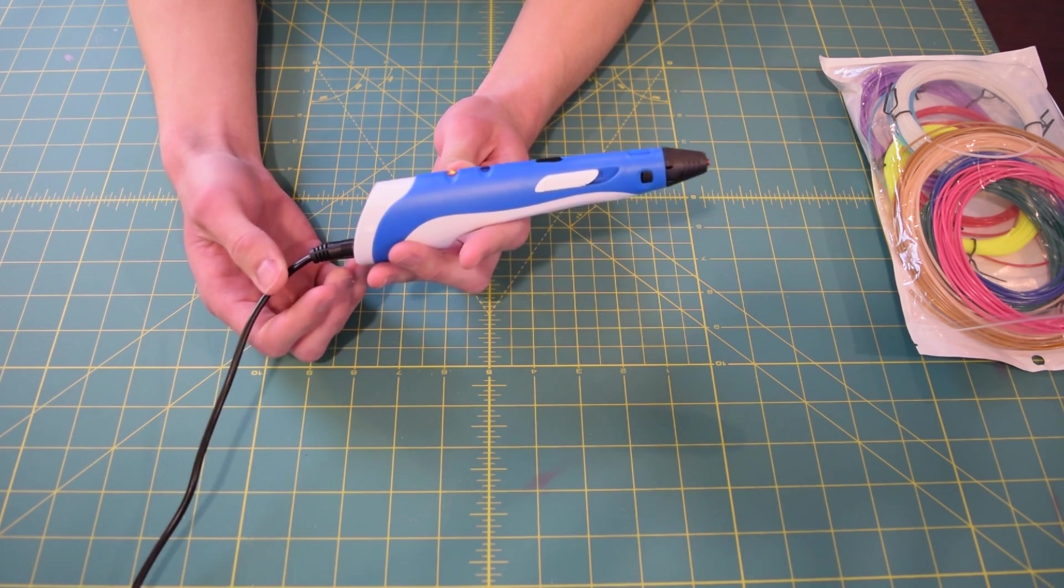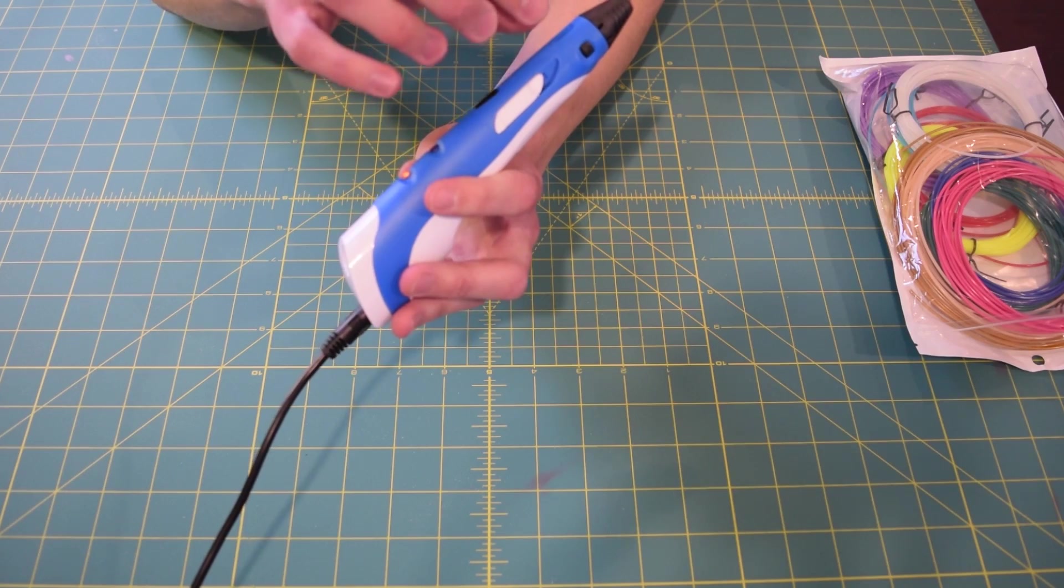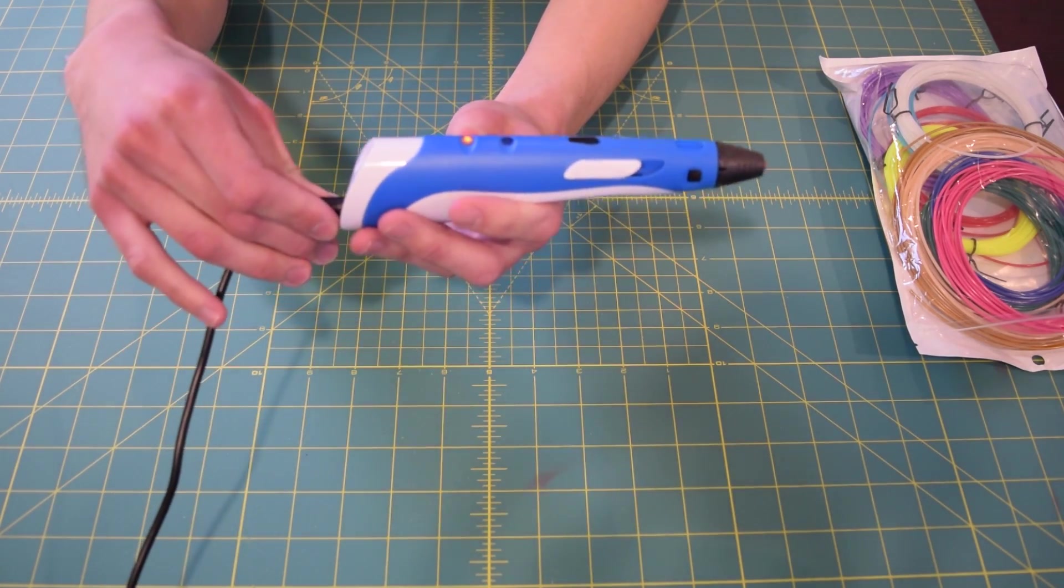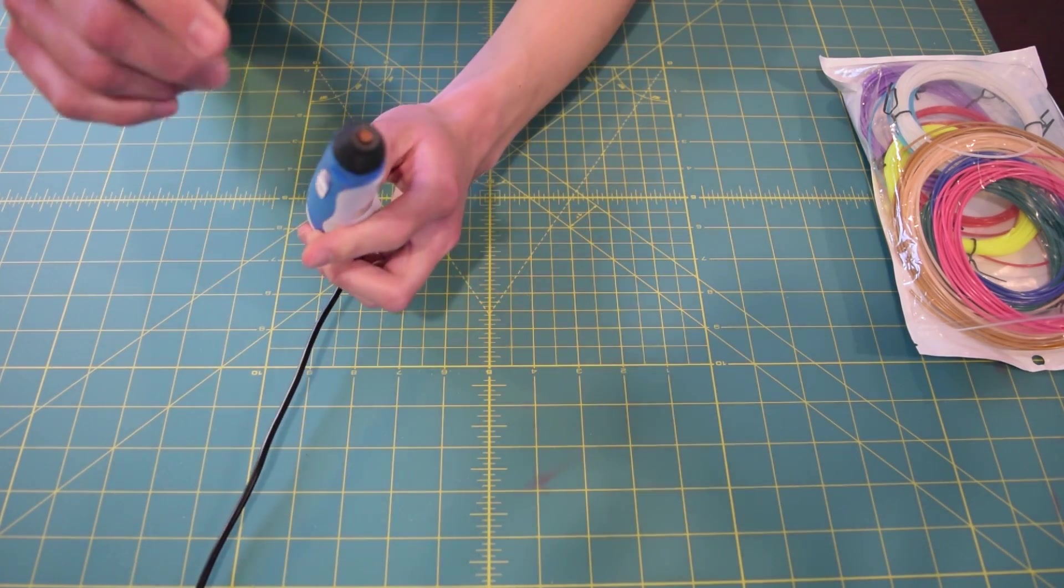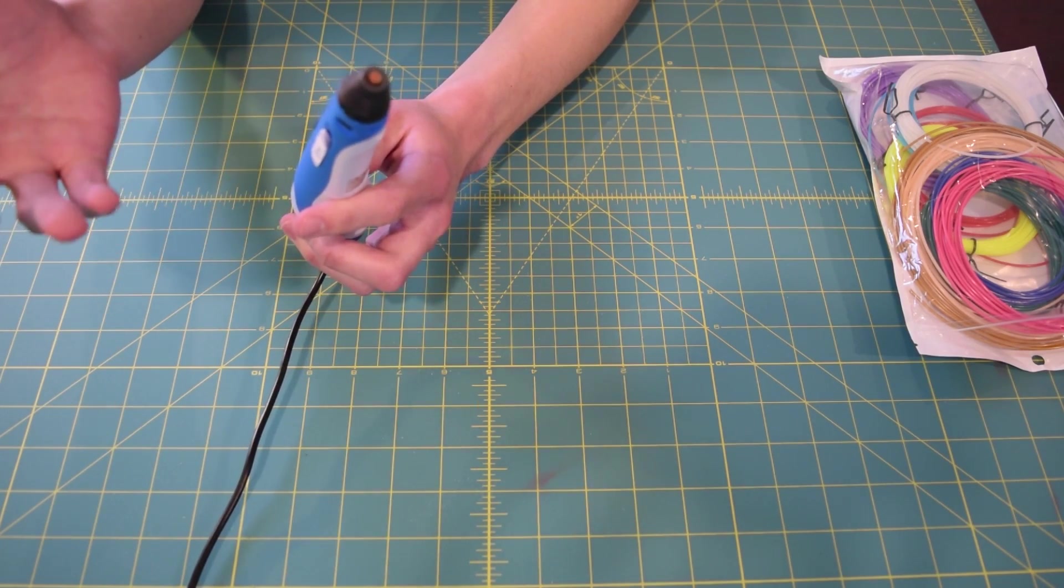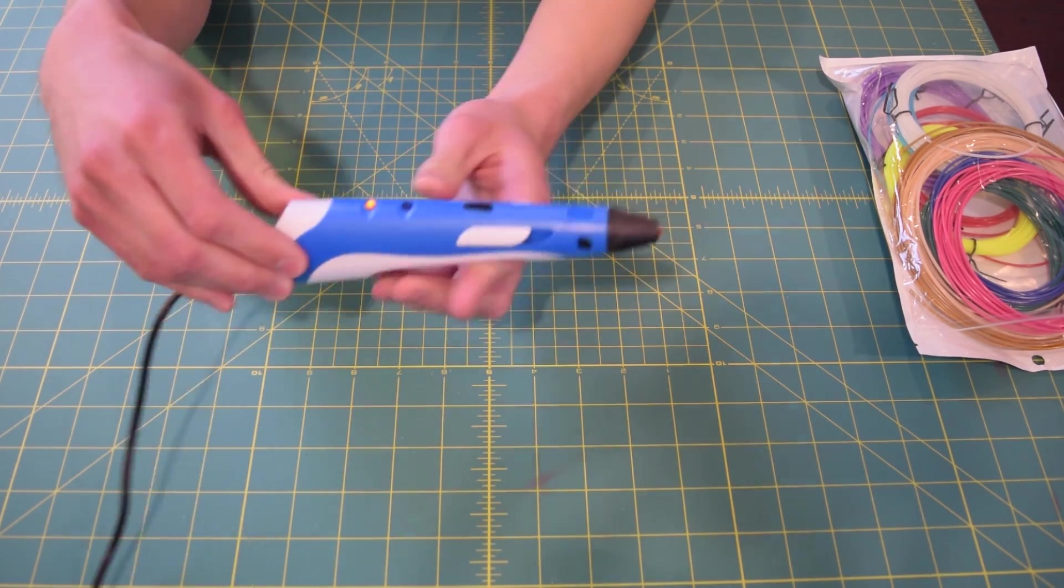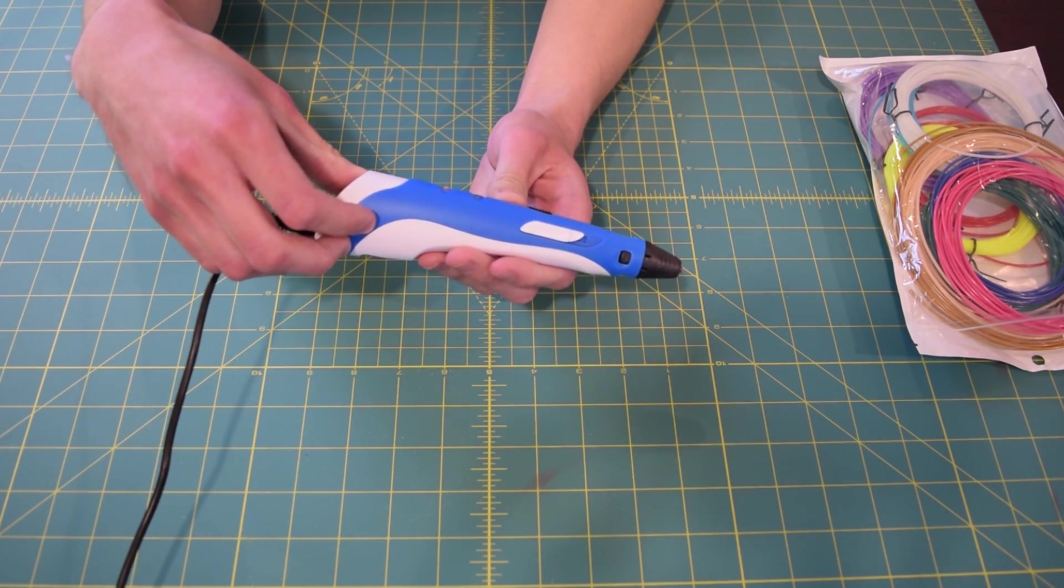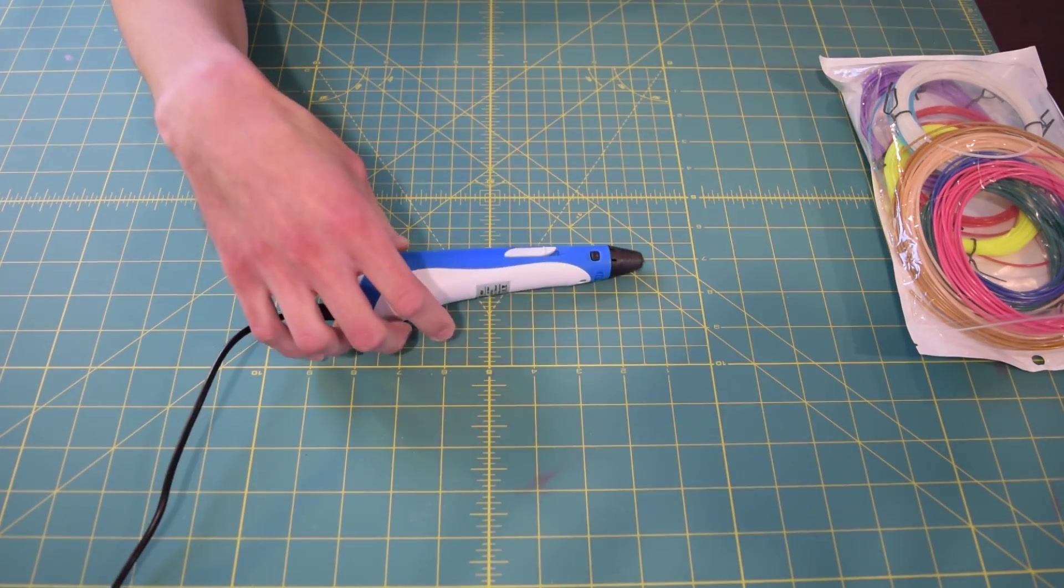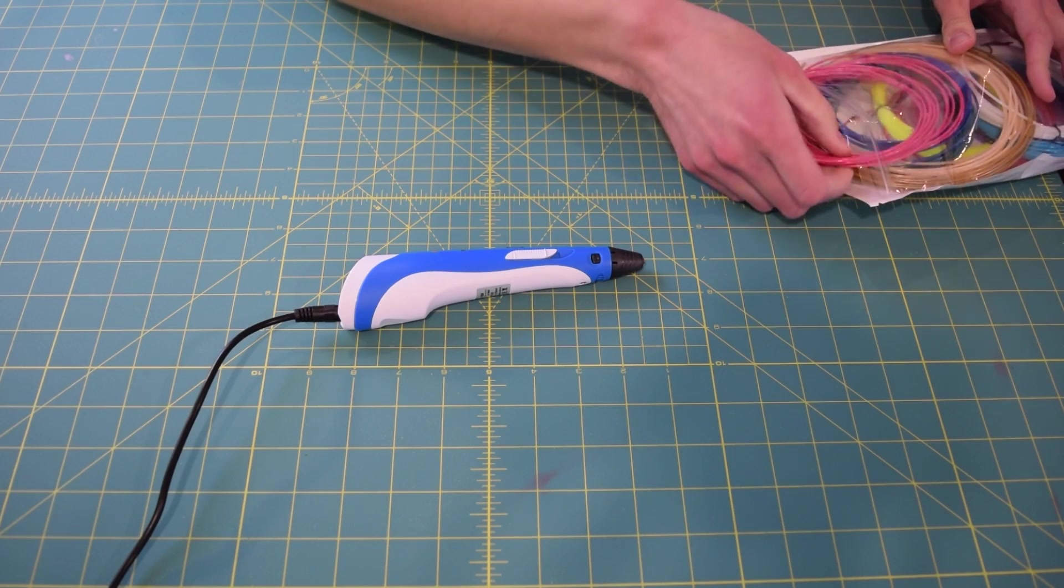And there wasn't really any helpful information online. Pretty much everyone was just saying, take some sort of thin metal object and just shove it down here and try to unclog it. That's what my dad did and he ended up breaking off this little tip piece right here, which you don't really need. But my sister was kind of frustrated at him for that. And I'm still waiting for this to turn green so we can put some filament through.